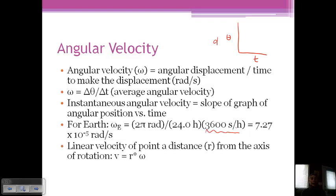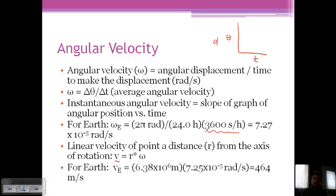If we wanted to relate this to linear velocity, the V would represent our linear velocity. And this would equal R times our angular velocity. And so if we do that for Earth, we know that the radius of Earth is 6.38 times 10 to the 6th meters times our angular velocity that we just figured out. And that comes out to 464 meters per second.